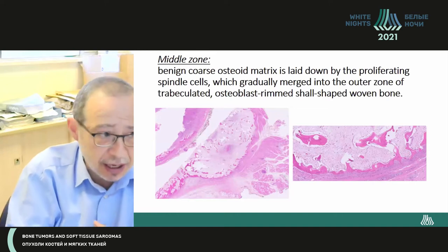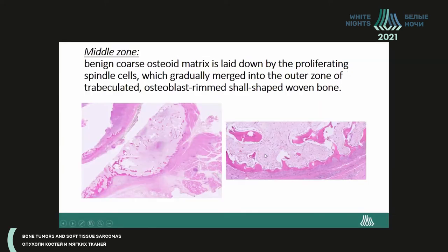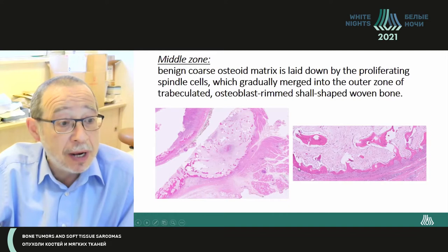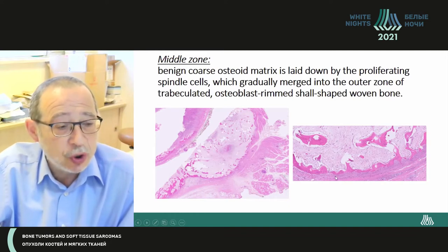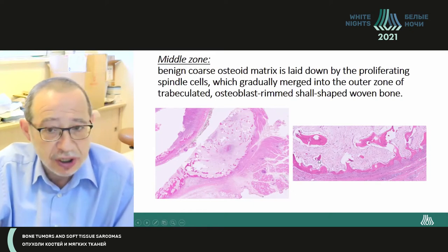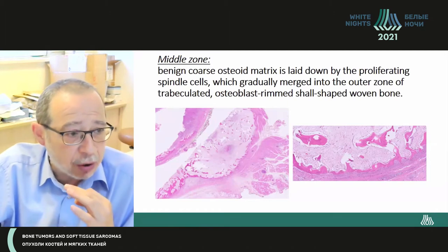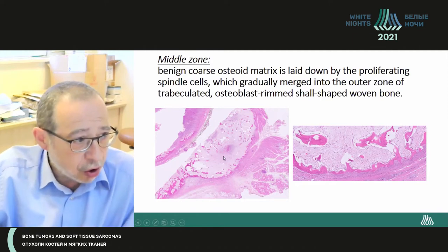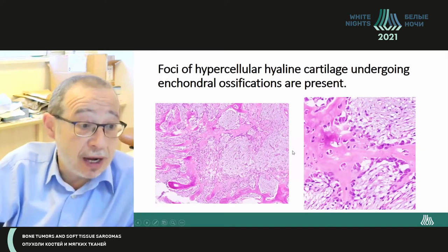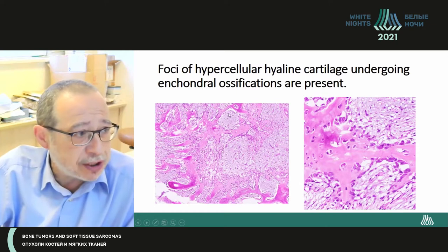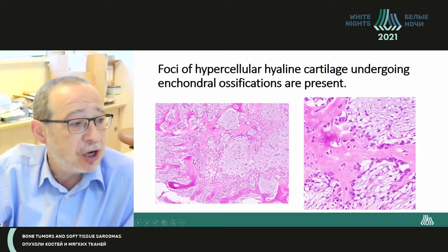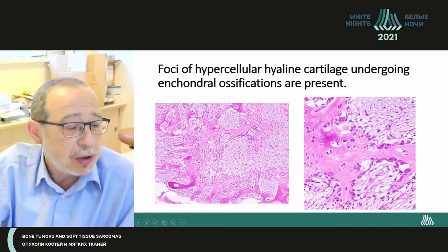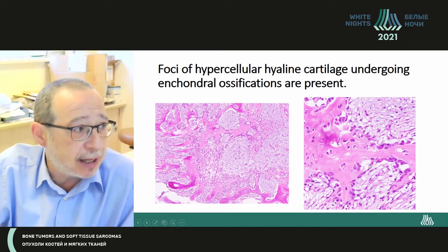All together it looks like an aneurysmal bone cyst. In the middle portion, you can see proliferating spindle cells and also formation of a pseudomembrane constructed from ripening bone tissue surrounded by osteoblasts — osteoblast-rimmed. The stroma is of myxoid type, spongy. And here you can see new bone formation with prominent osteoblastic rimming.